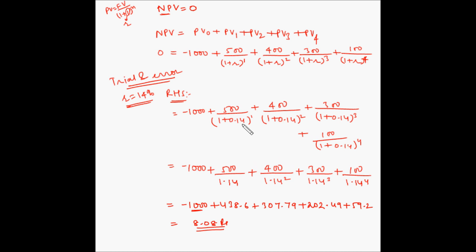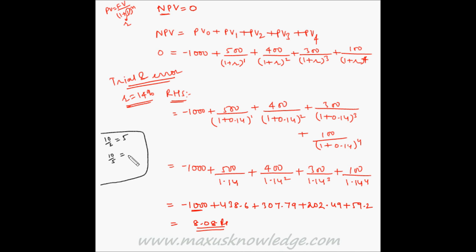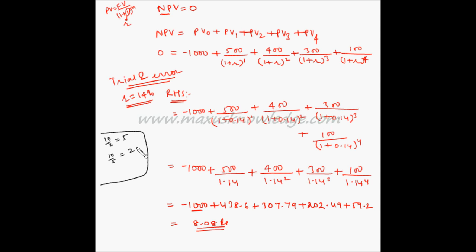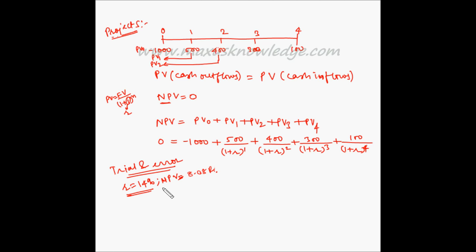To lower the right-hand side, we have to increase the denominator. To understand this concept: if you have 10/2 = 5, and you increase the denominator to get 10/5 = 2, the value decreases. So if the denominator increases, the answer decreases. At R = 14%, the NPV comes out to be 8.08 rupees. Now let's find out the NPV at R = 15% by replacing R with 0.15 in our equation.